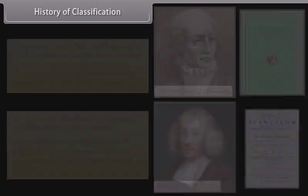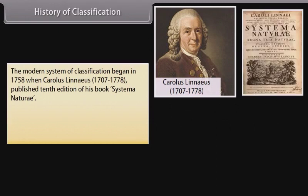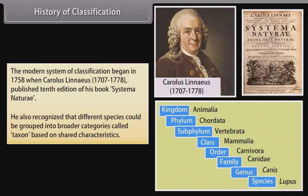The modern system of classification began in 1758 when Carolus Linnaeus (1707–1778) published the 10th edition of his book Systema Naturae. He also recognized that different species could be grouped into broader categories called taxon, based on shared characteristics.